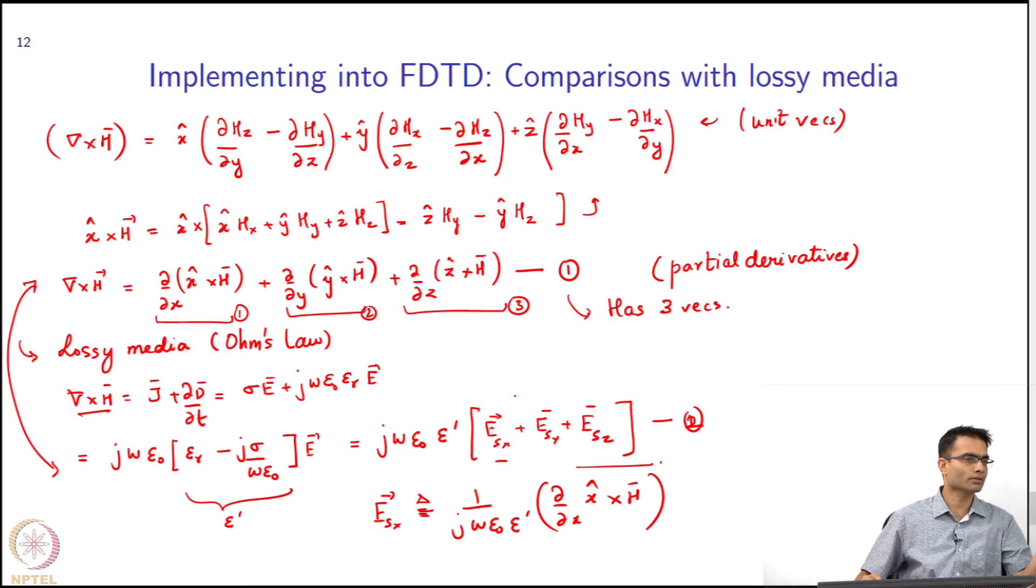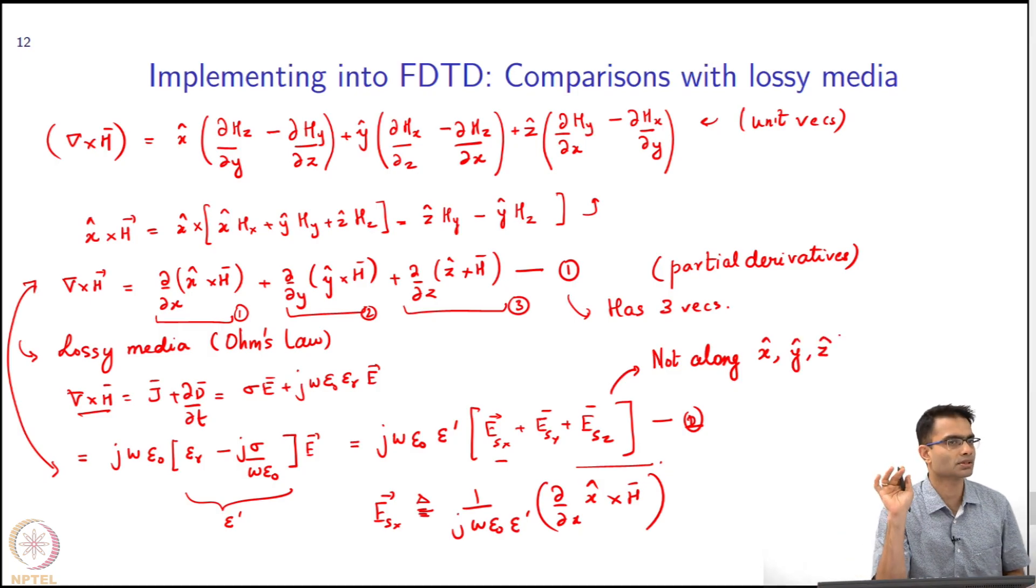What are those three arbitrary directions? They are given by the unit vectors x hat cross H, y hat cross... I can decompose a vector into any three orthogonal directions as I want. These are not along x hat, y hat, z hat - three arbitrary directions which are defined as x hat cross H, y hat cross H, z hat cross H. So far I have not done anything new except just reinterpret Maxwell's equations and lossy media. There is no mention whatsoever of PML.